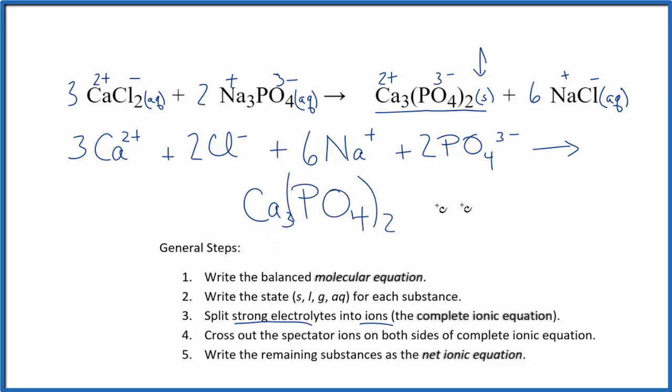PO4)2, plus we have Na+. That's our sodium ion there. We have six of those, and then we have the one times the six, six chloride ions.